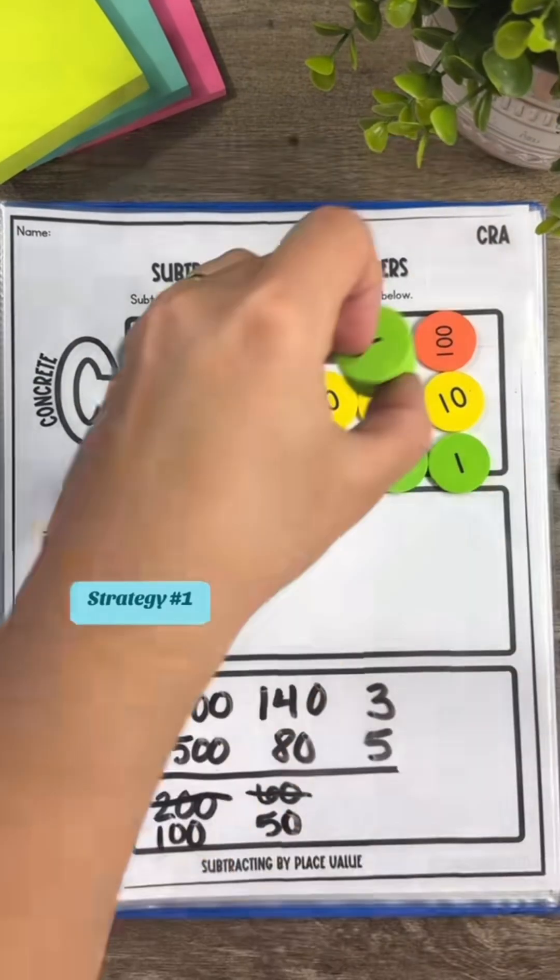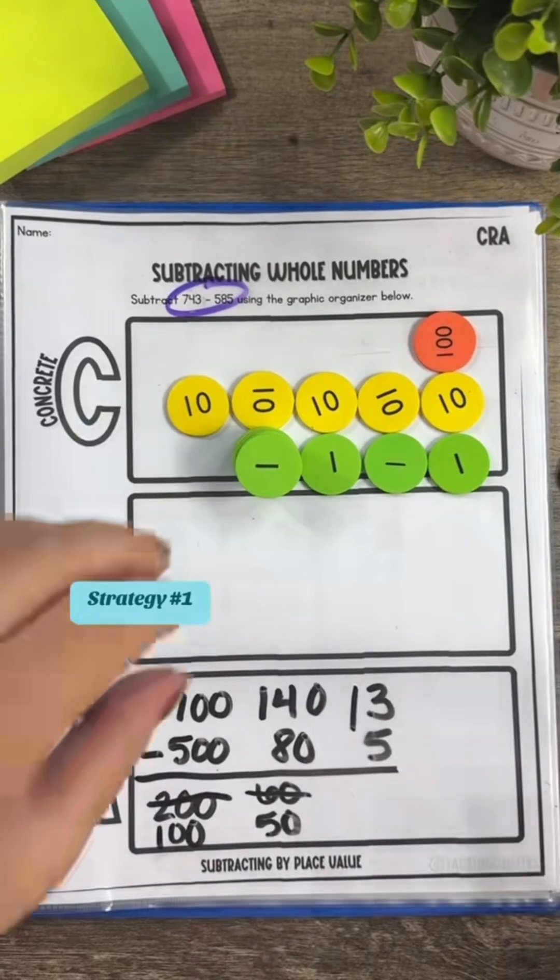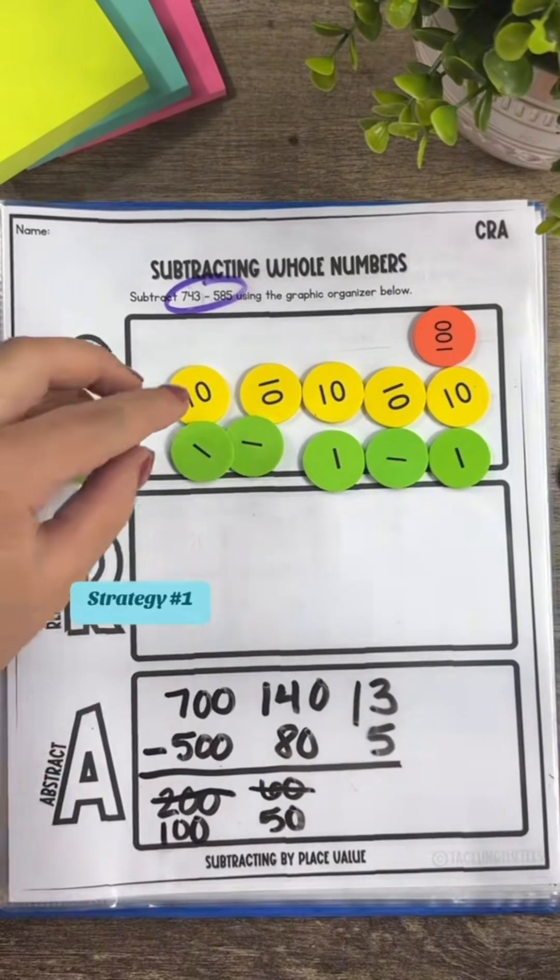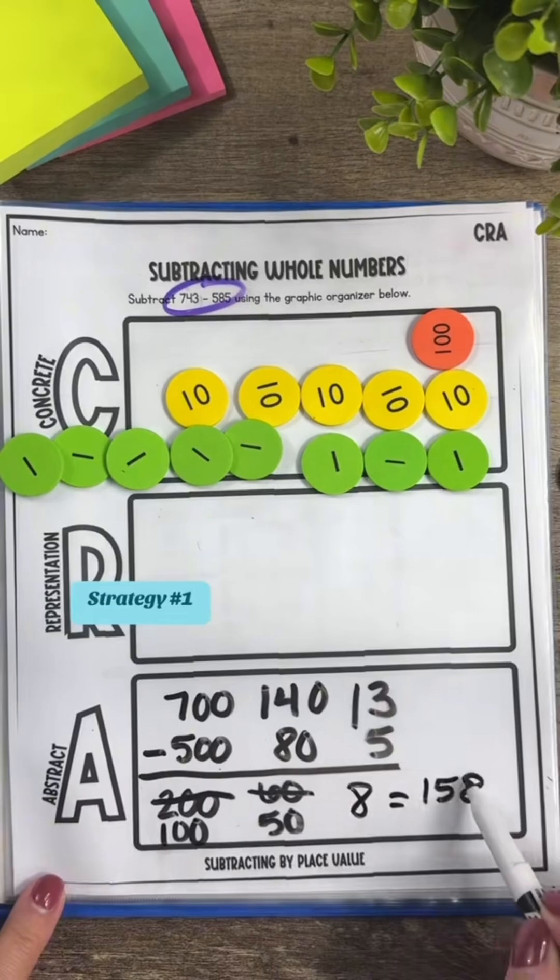In the same concept with our ones place, let's break apart a 10 and add 10 ones to get 13 ones. Then 13 minus 5 does give us 8. So the difference is 158.